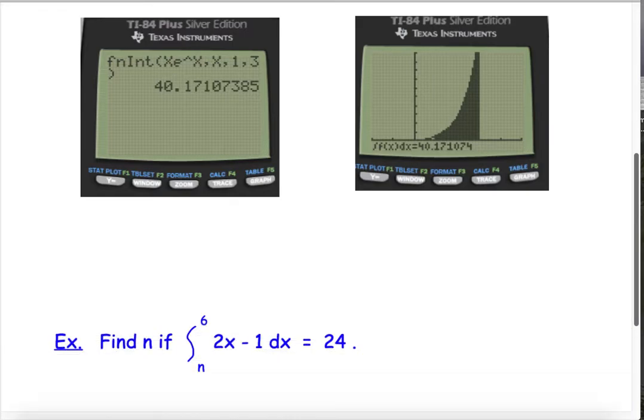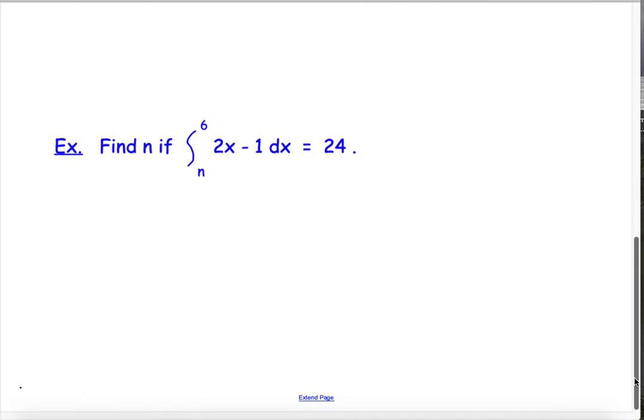All right, let's look at another example. Now, this is slightly different. And even though it's different, if you have the understanding of the concept behind a definite integral, you should be able to do this. So, find n if the integral from n to 6 of 2x minus 1 dx is equal to 24. So, we're missing the lower limit of integration, but we know what the answer is supposed to be. So, what do we do? Well, let's just work it out like we would normally. Find the antiderivative, the antiderivative of 2x minus 1 is going to be x squared minus x, and we're evaluating from n to 6, and we know the answer should equal 24.